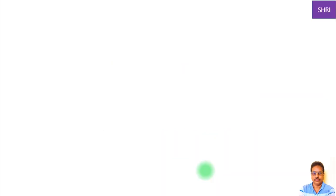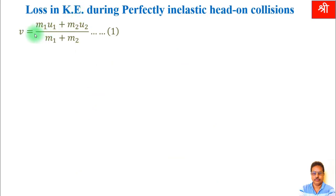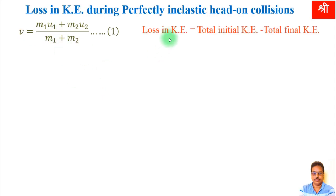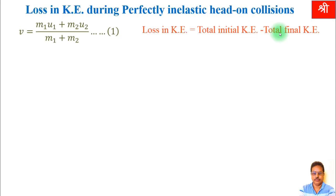We have derived the expression for final velocity after collision in perfectly inelastic collision. Now, loss in kinetic energy equals total initial kinetic energy minus total final kinetic energy. For example, if initial kinetic energy was 1000 joules and kinetic energy after collision was 900 joules, then 1000 minus 900 equals 100 joules — that is the loss in kinetic energy.